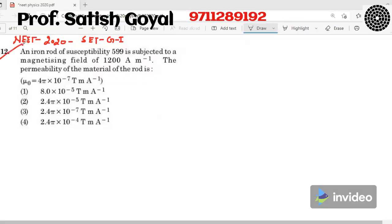Question number 12. An iron rod of susceptibility 599 is subjected to a magnetic field of 1200 ampere per meter. The permeability of the material of the rod is.